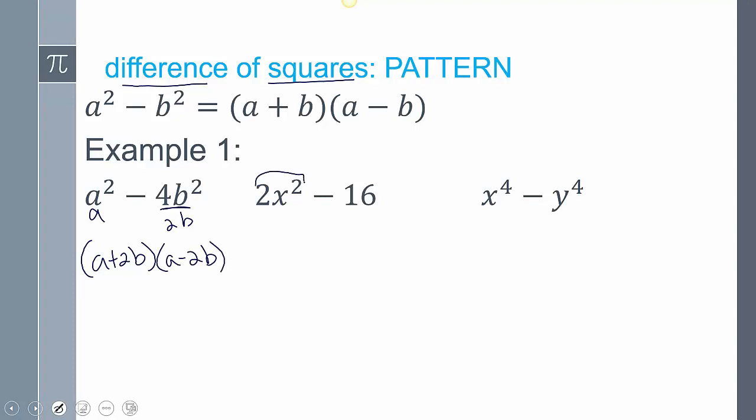Now, this is not a perfect square. If I took the square root of 2, it's not going to work out. Sometimes, we may have to factor first. And so, if I factor out the 2, then I get 2x squared minus 8. It's still not a difference of squares because now 8 isn't a perfect square. So, we can't factor that further.